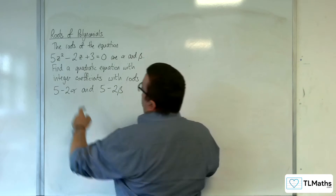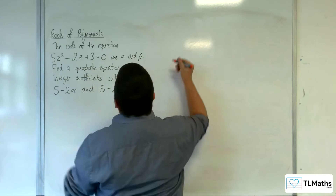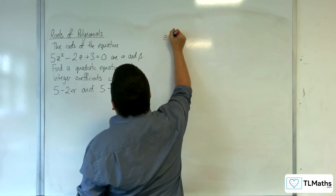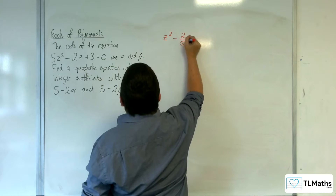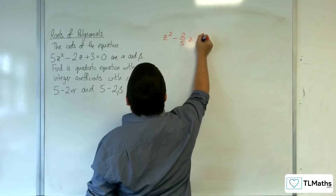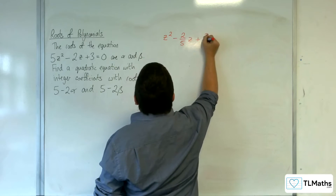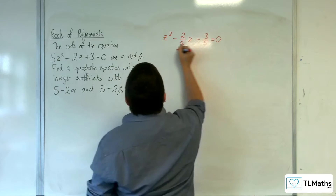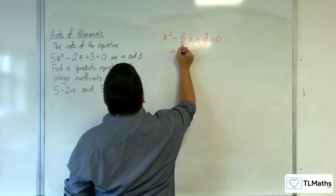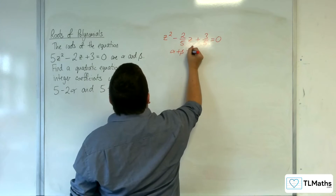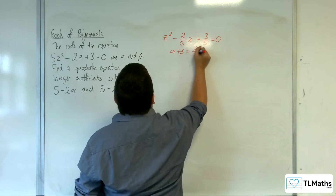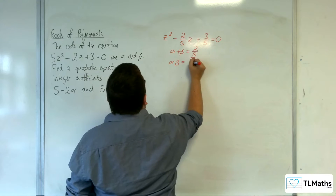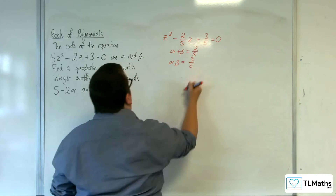The first thing we need to do is divide through by the 5. So z squared take away 2 fifths z plus 3 fifths equals 0. So alpha plus beta must be 2 fifths and alpha beta is 3 fifths.